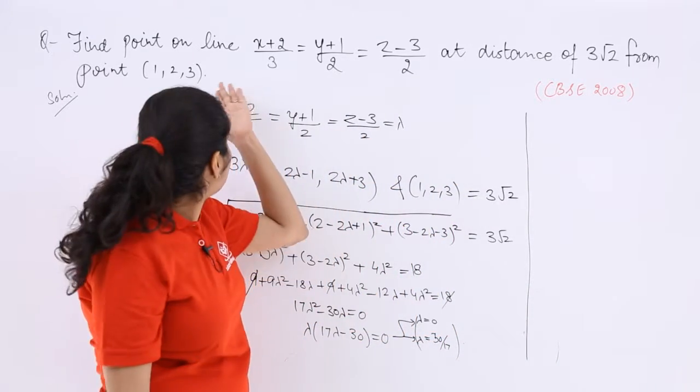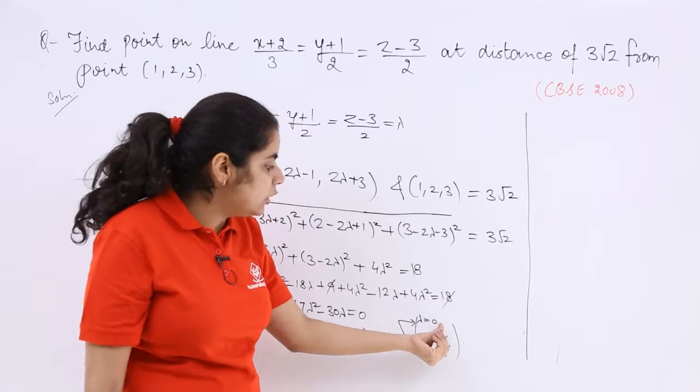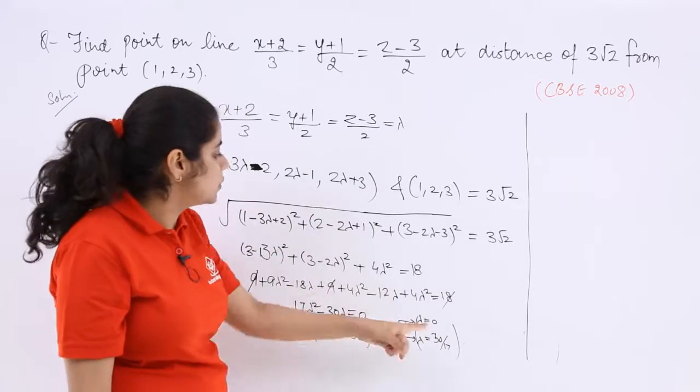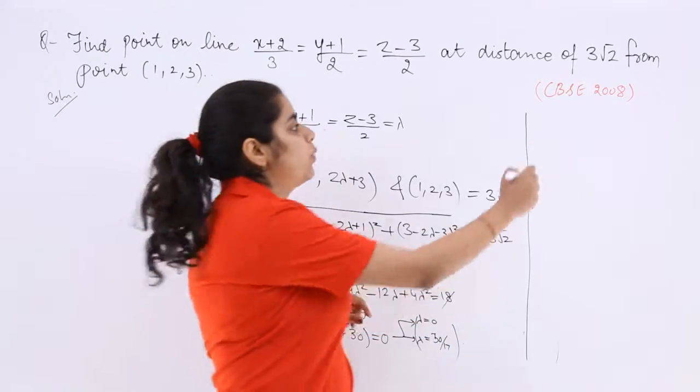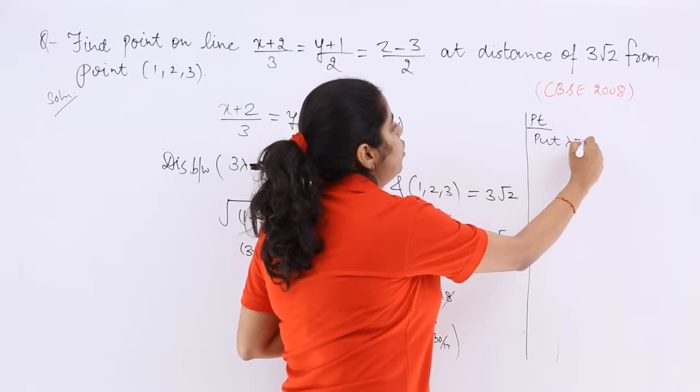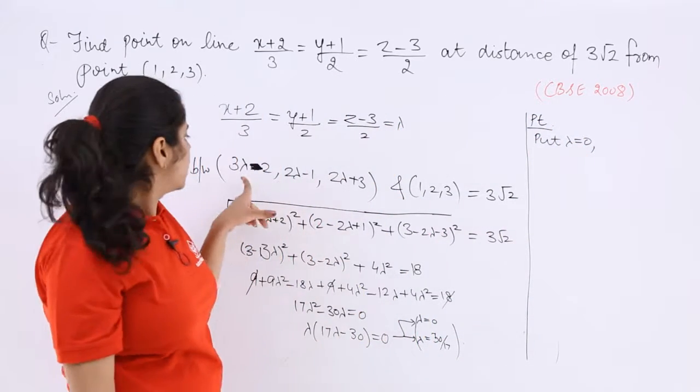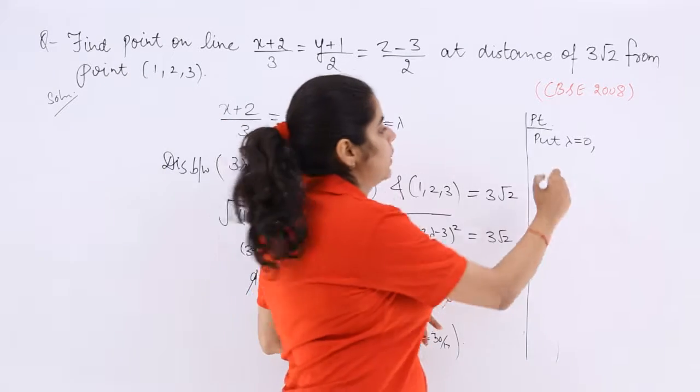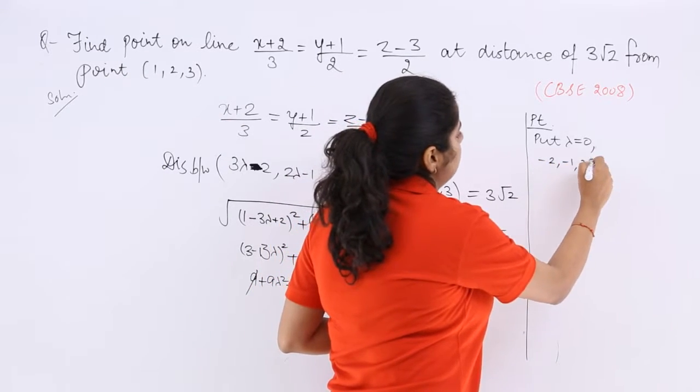The rest that is asked is find a point on the line. To find a point on the line, the first thing you can put lambda here. So point on the line can be found out by put lambda is equal to 0. So what should be the answer? Here it is minus 2, minus 1, 3. So minus 2, minus 1 and 3.